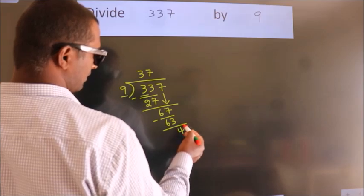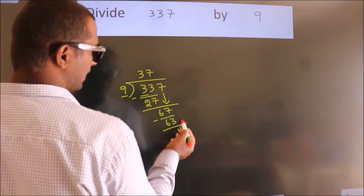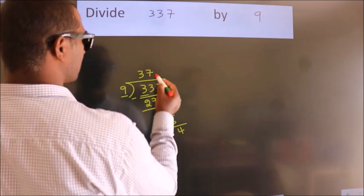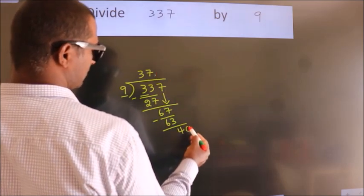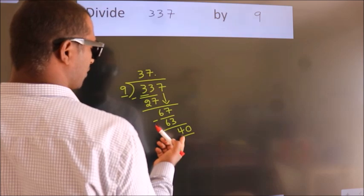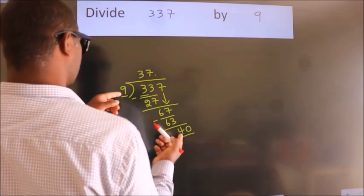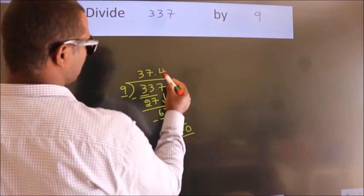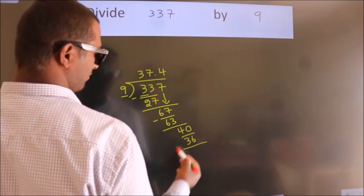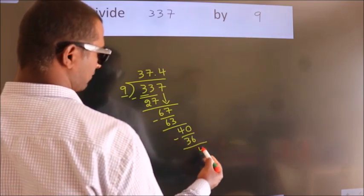After this, no more numbers to bring down. So what we do is we put a dot and take 0. So 40. A number close to 40 in the 9 table is 9 fours, 36. Now we subtract. We get 4.